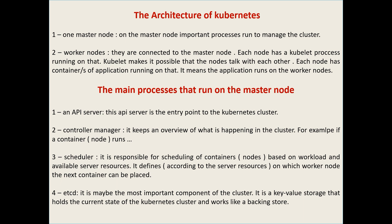On the master node, the first process is the API server. This API server is like the entry point to the Kubernetes cluster. The second one is the controller manager — it keeps an overview of what is happening in the cluster, for example whether a container is running or not. The third one is the scheduler, which is responsible for scheduling containers.